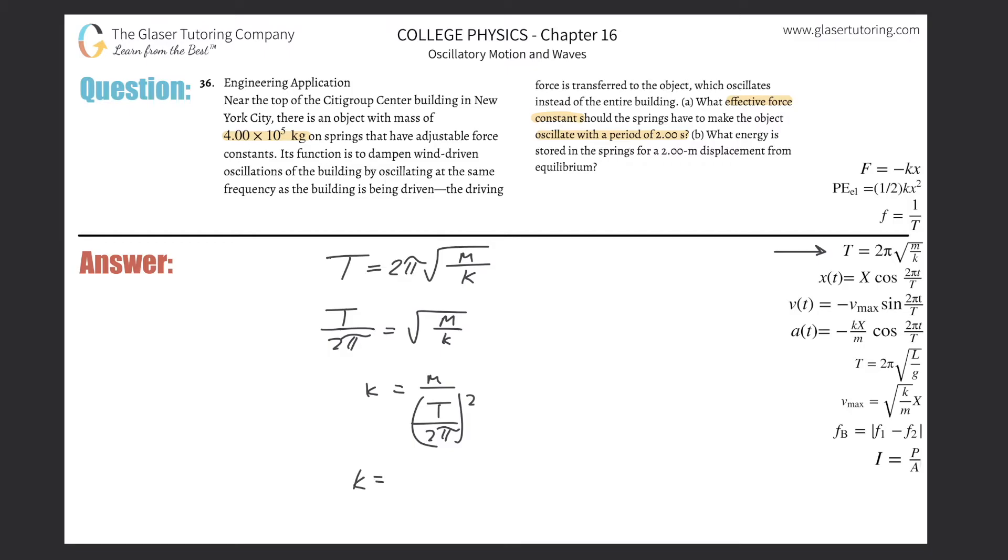So the force constant is going to be the mass, which is 4 times 10 to the 5th, all divided by the period, which they told us is 2 seconds, divided by 2 pi squared. So it's going to be 4 times 10 to the 5th, divided now by basically 1 over pi, 1 over pi, and that's squared.